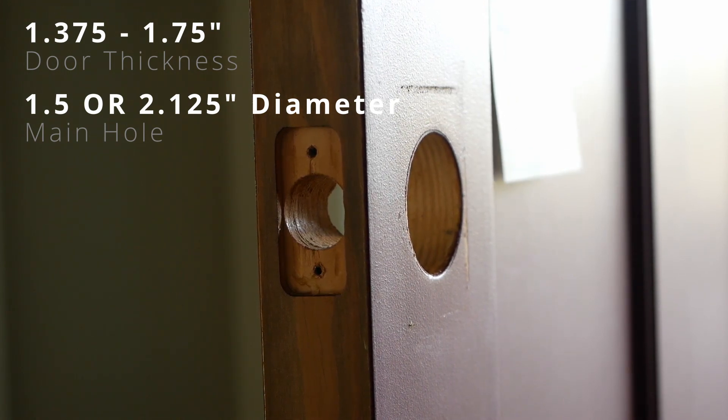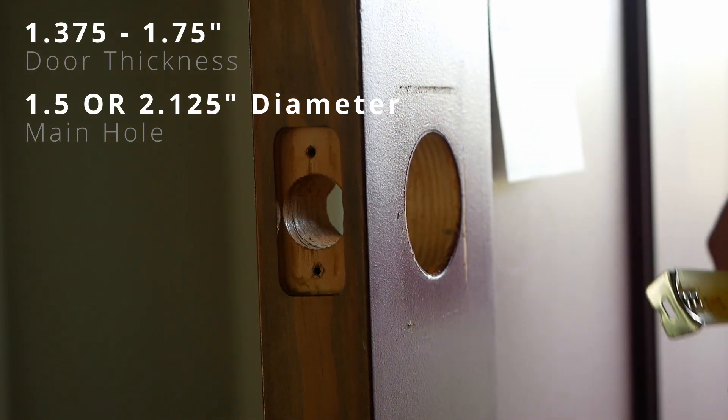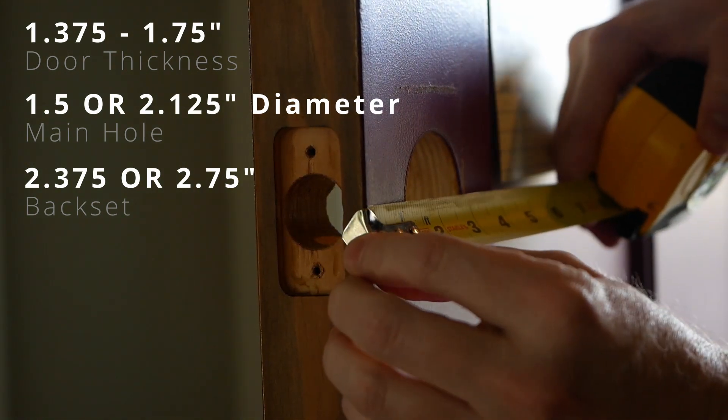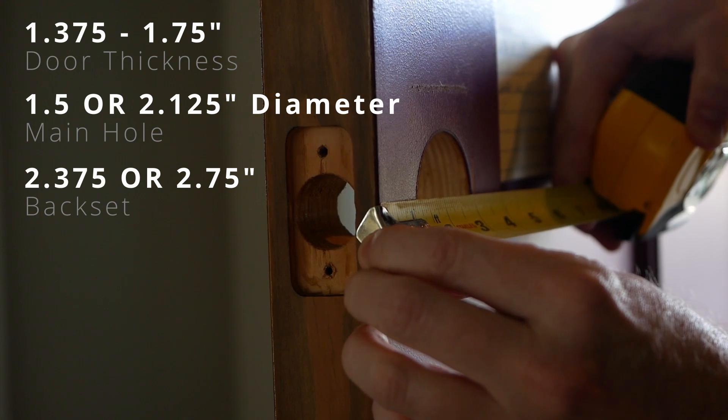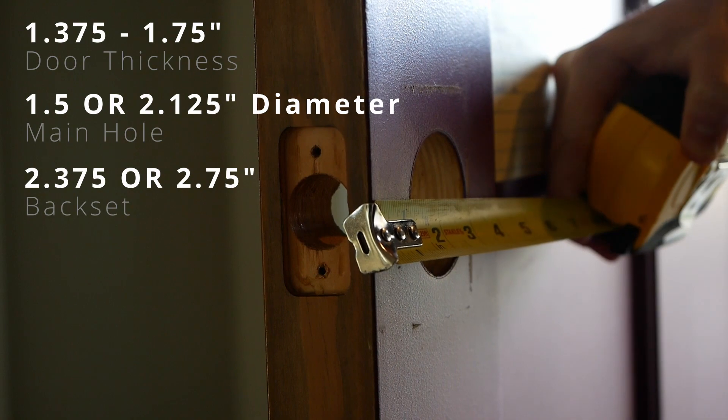Your backset is basically from the edge of your door here to the middle of the hole, and that needs to be either two and three eighths or two and three quarters. This particular one is two and three eighths, so just basically an imaginary line going right down there to the two and three eighths mark.